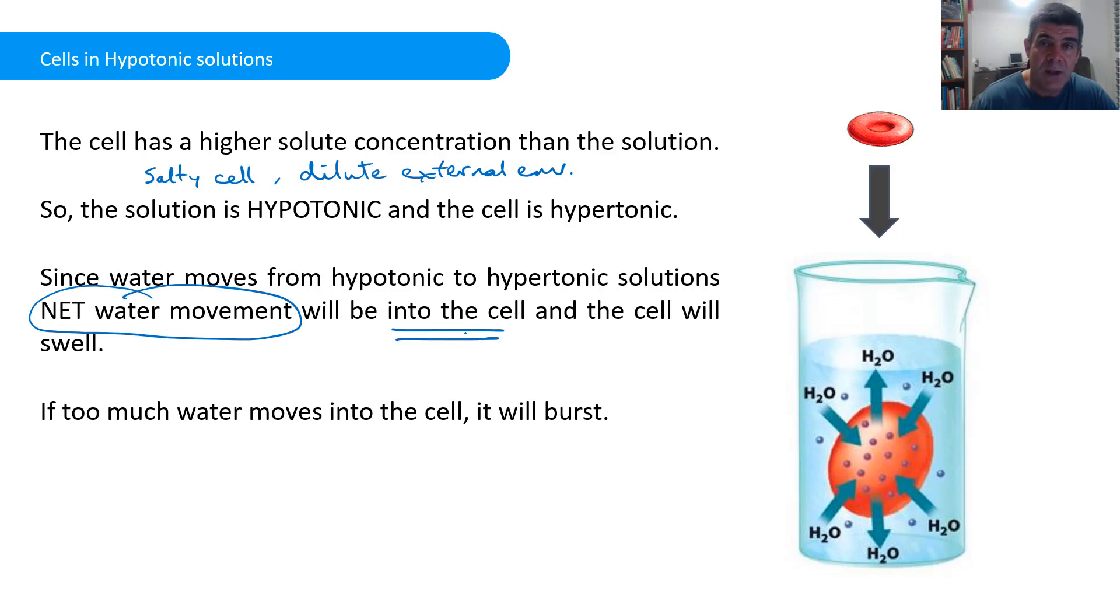So we get a net movement of water into our cell. Now notice I've used the word net because in our little diagram we can see that some water may actually move out of the cell, but more water is going to move into the cell. So when we add up what's going out and compare it with what's coming in, we find that overall there's an excess of water that's coming into the cell. Now the problem with that is if too much water comes in, as the cell becomes more and more turgid, it can potentially burst. There is a possibility, particularly if there's no structures to counter this, then it's possible that the cell can burst, and obviously that's a major problem for the cell.